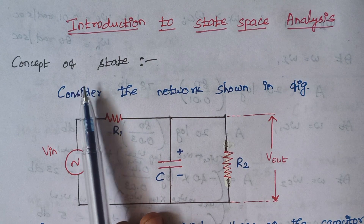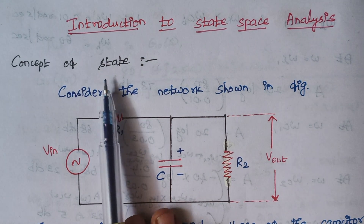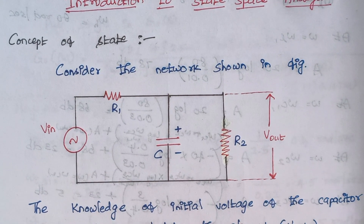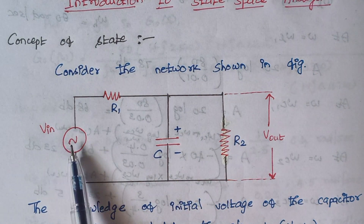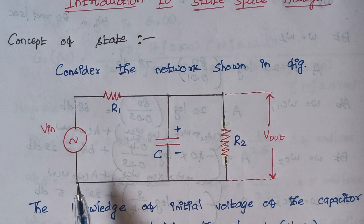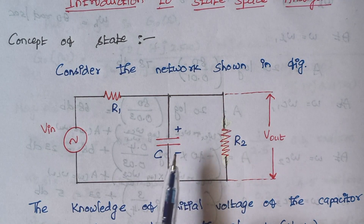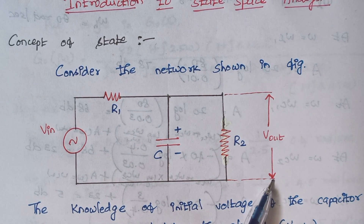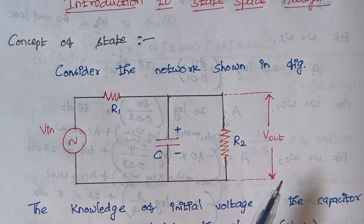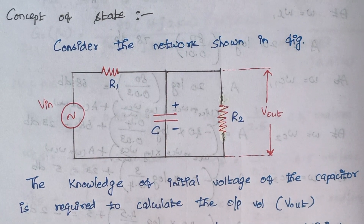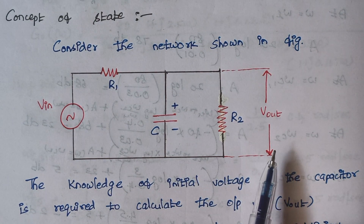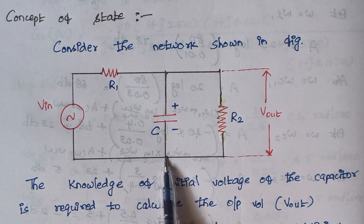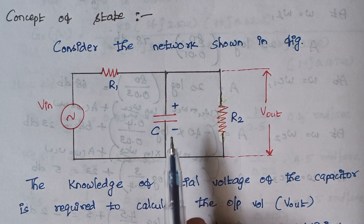Let me start with the concept of state. To explain what is meant by state, consider the network shown here. In the given network, this is our input voltage and we are having a network of resistors and capacitors. In this circuit, we must calculate what is the output voltage. In order to calculate the output voltage, it is mandatory to know the voltage across the capacitor, because the capacitor is an energy storing element.